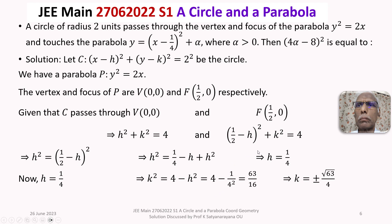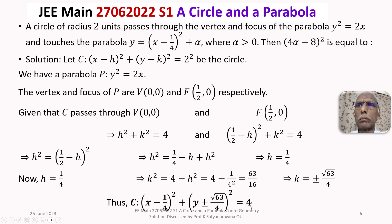Therefore the equation of circle C is (x − 1/4)² + (y ± √63/4)² = 4. This single form represents two circles — one for the positive value and one for the negative value of k.